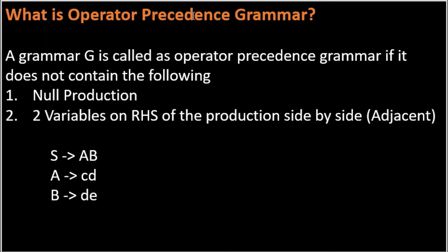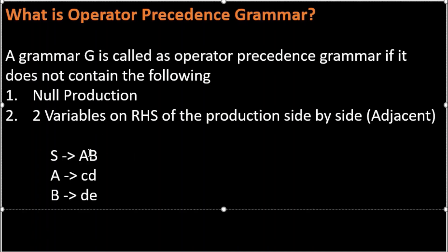The next important question is: what is operator precedence grammar? A grammar G is called an operator precedence grammar if it does not contain null productions and does not have two variables on the RHS side by side. For example, S → AB contains two adjacent variables A and B, so this is not an operator precedence grammar. If we place a terminal 'e' between them, it becomes an operator precedence grammar.